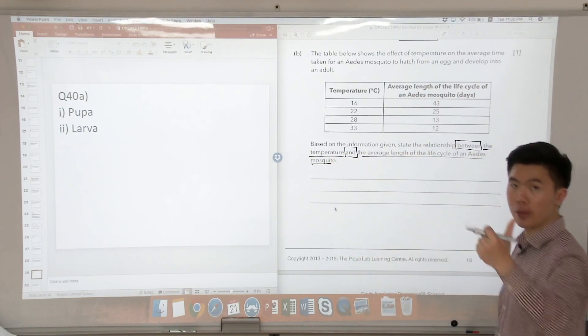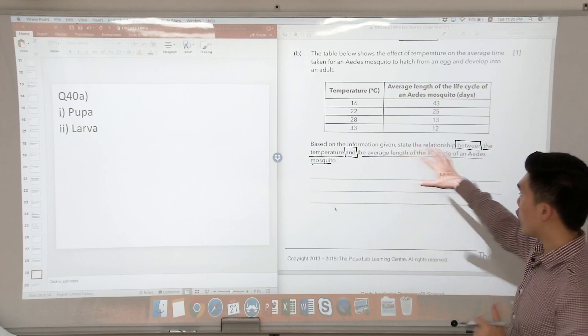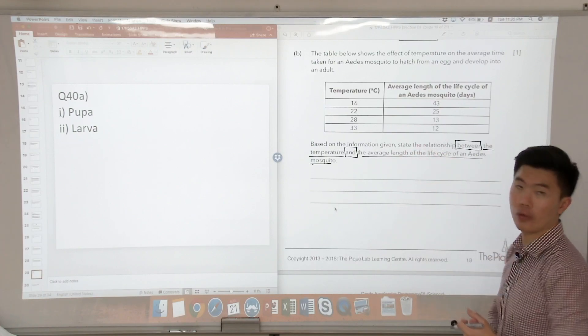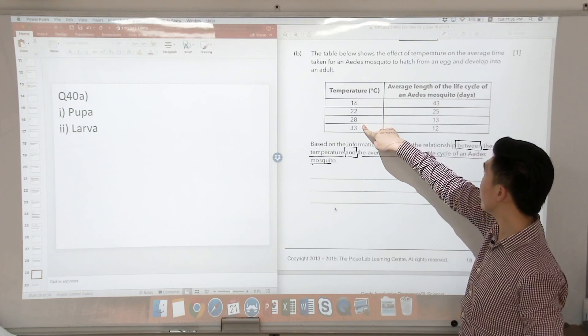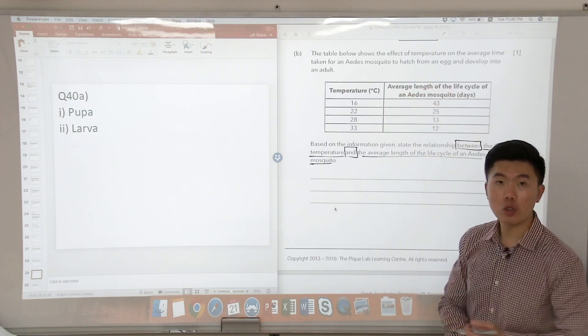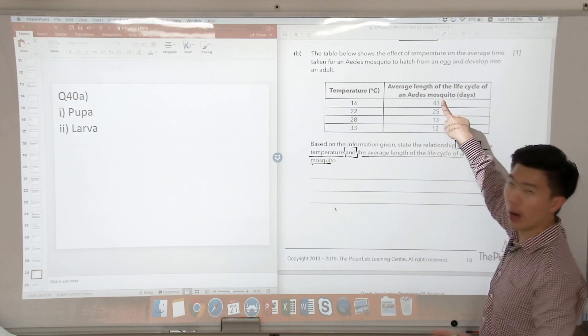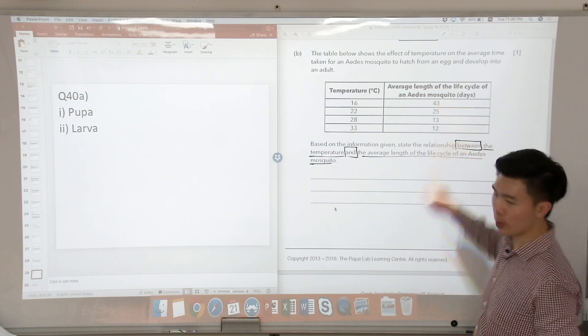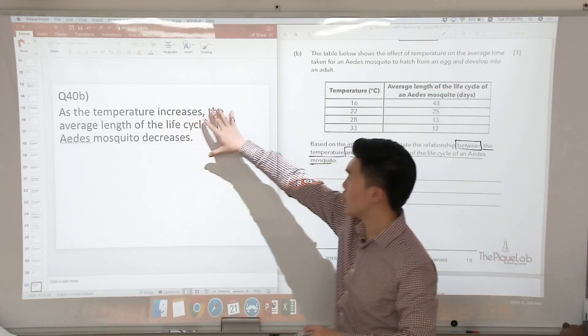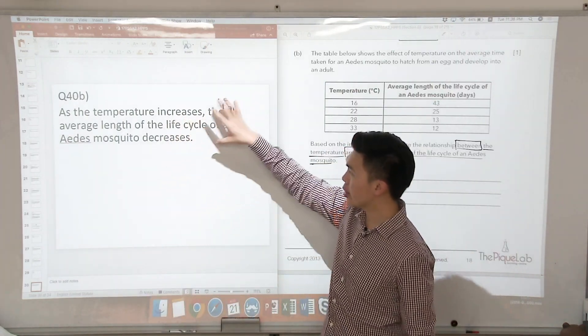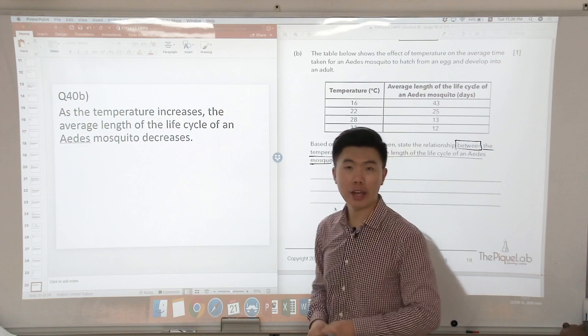This gives us our two variables. The first one is temperature, the second one is the average length of the life cycle of an Aedes mosquito. So what do we see here? As the temperature increases, the average length of the life cycle of an Aedes mosquito, does it go up or go down? It goes down, so we say it decreases.